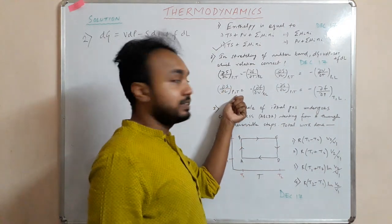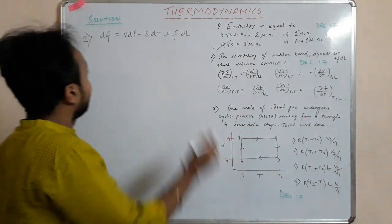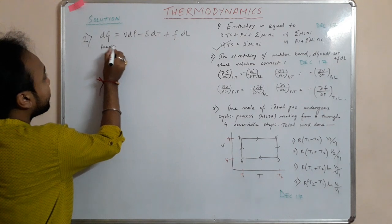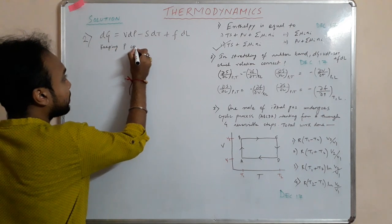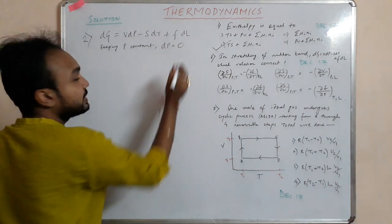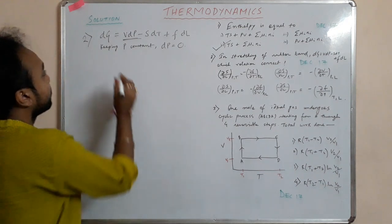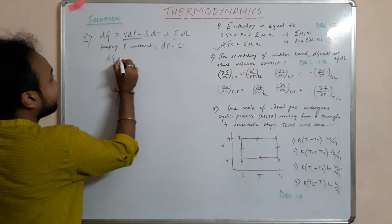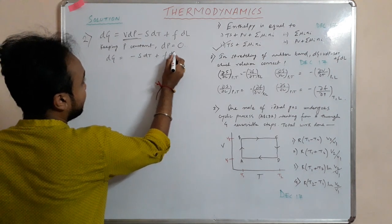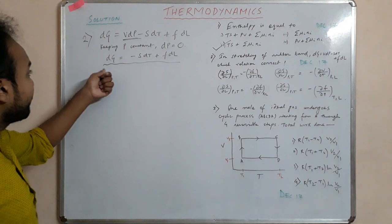In all the answer relations, pressure and temperature are constant. Keeping pressure constant means dP = 0, so the VdP term vanishes. Therefore dG = −SdT + FdL.